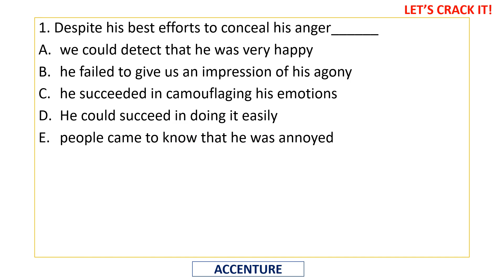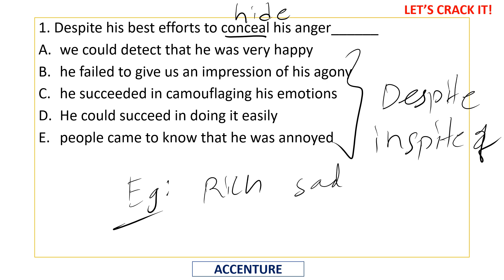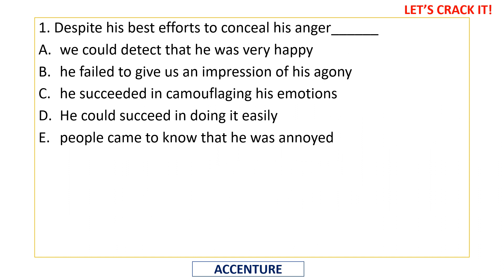The first question: 'Despite his best efforts to conceal his anger' — we are supposed to fill the blank. Conceal means hide. There is a hard and fast rule: whenever a sentence starts with 'despite' or 'in spite of,' the two clauses must give opposite sense. For example, 'despite being poor, he is happy.' Here, he is putting his best efforts to hide his anger, but people came to know he was annoyed — so option E is correct.